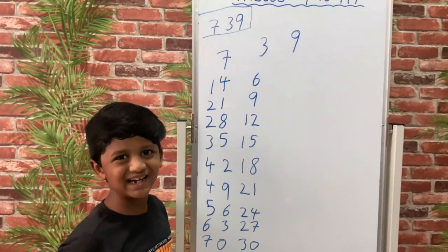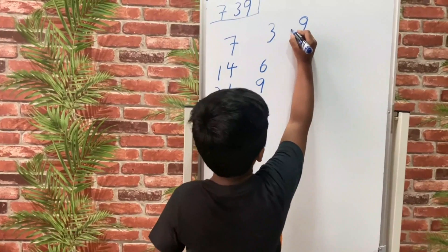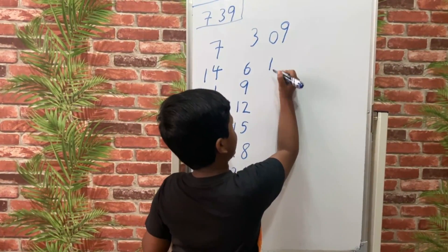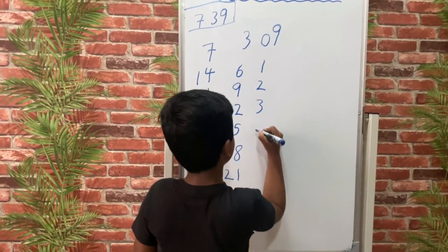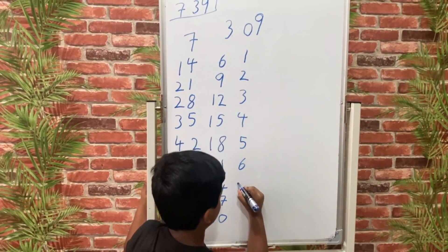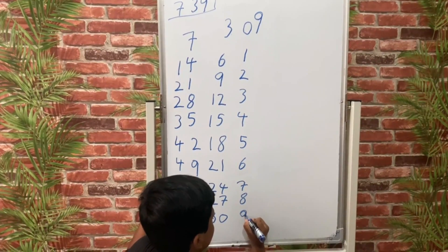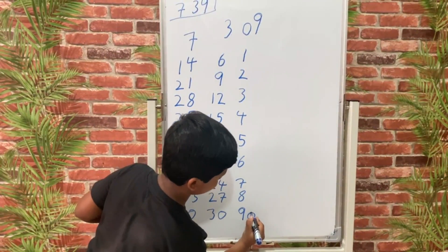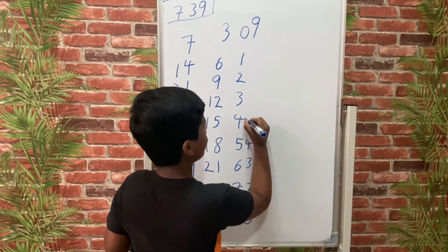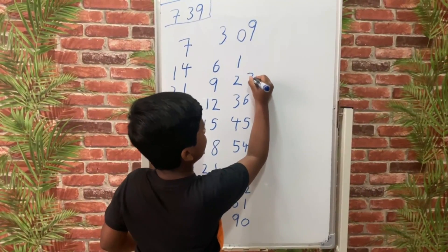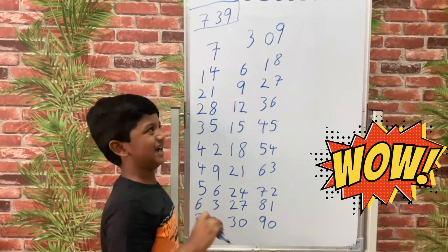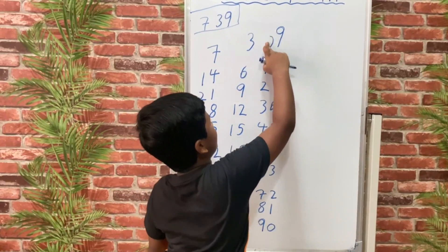Then we will write the 9th table, and there is one simple tip to write the 9th table — we will write 09, and then write numbers from 0 to 9: 1, 2, 3, 4, 5, 6, 7, 8, 9. Then we write numbers from 0 to 9 again: 0, 1, 2, 3, 4, 5, 6, 7, 8. And this is our 9th table — note that 09 is nothing but 9.